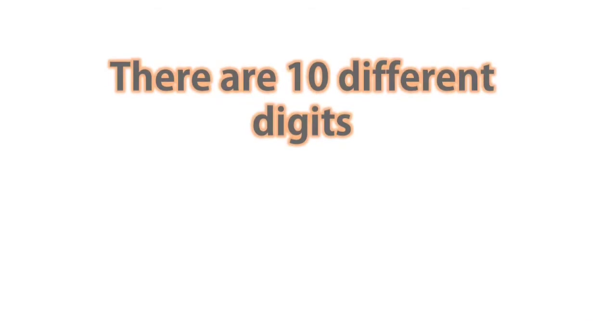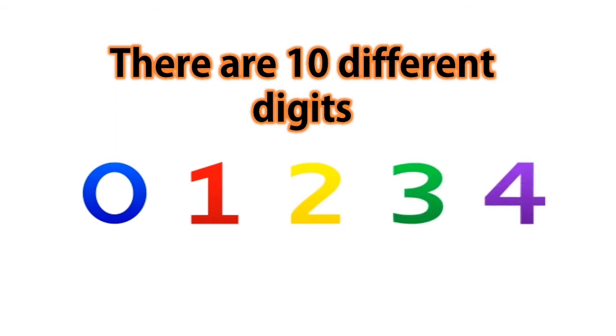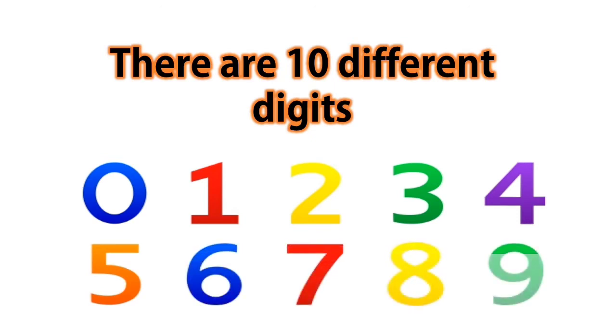Let us start. We know that there are ten different digits: zero, one, two, three, four, five, six, seven, eight, and nine. We can make different numbers using these digits.